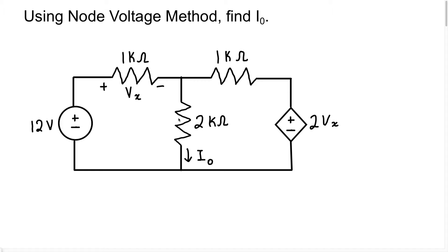Let's look at something really quickly. This is our first problem in node voltage where we're actually going to introduce a dependent source. We should remember exactly how to handle dependent sources when we have them in our circuit. The first thing is to identify what type of dependent source it is. In this particular situation, we have a voltage source, and it's going to be depending on a voltage. So this is a voltage-dependent voltage source.